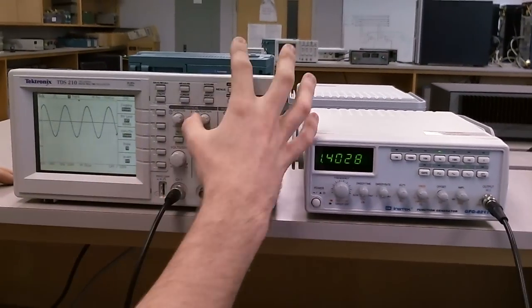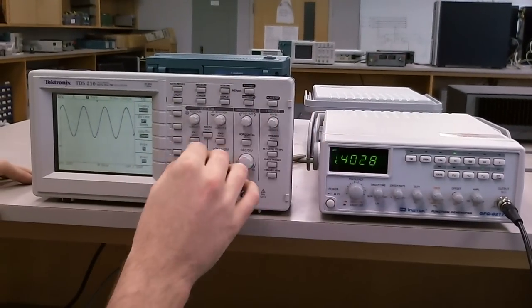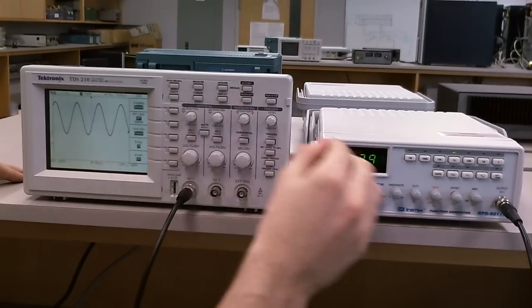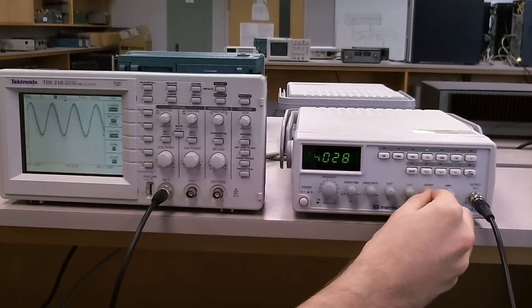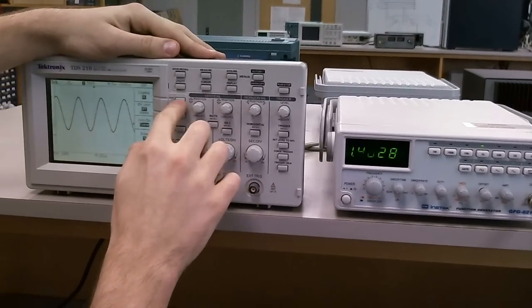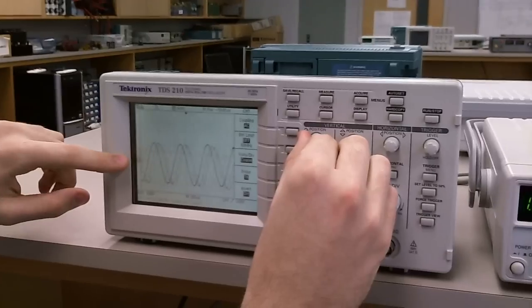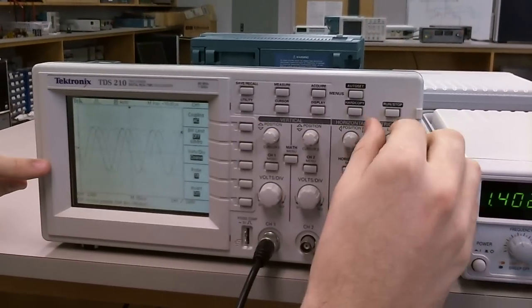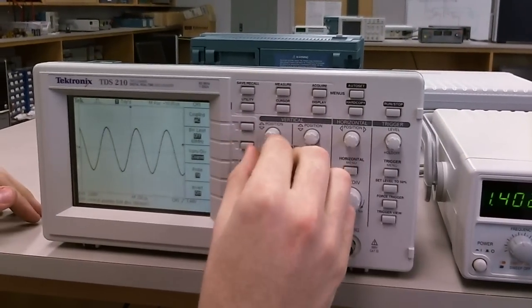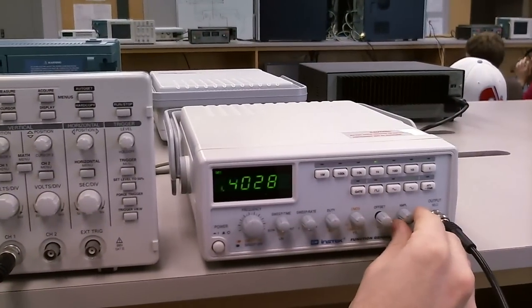So here right now, we're in DC coupling. What this means is we can see the DC offset of the wave. If we go ahead and move to AC coupling, we will see that the DC offset disappears and we only see the alternating part of the wave, the sine wave.